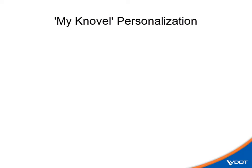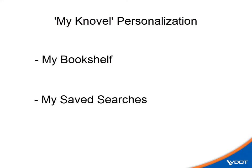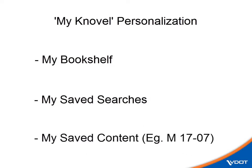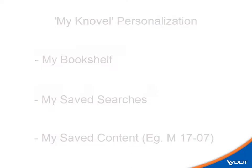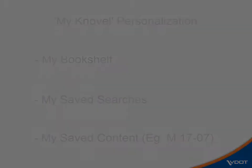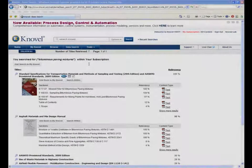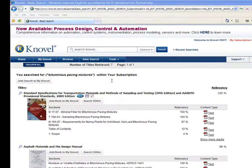My third tip: once you find an item, use the My Novel personalization features to save what you have found. My Novel allows you to save book titles, successful search queries, and even specific content, like specification M17-07, in a folder you create. If you find it once and save it, you'll never have to look for it again. Since we've just run a search that found what we wanted, let's go ahead and save the results in a few different ways.